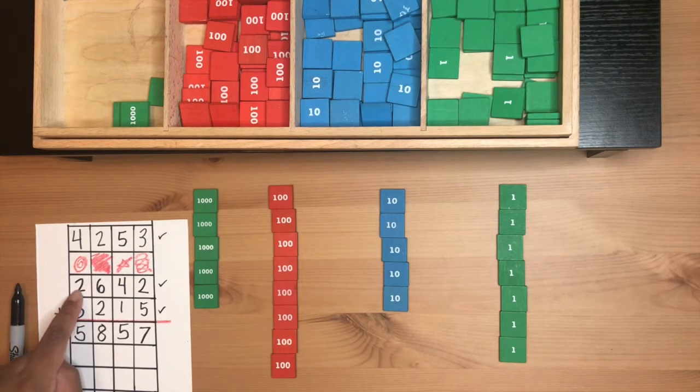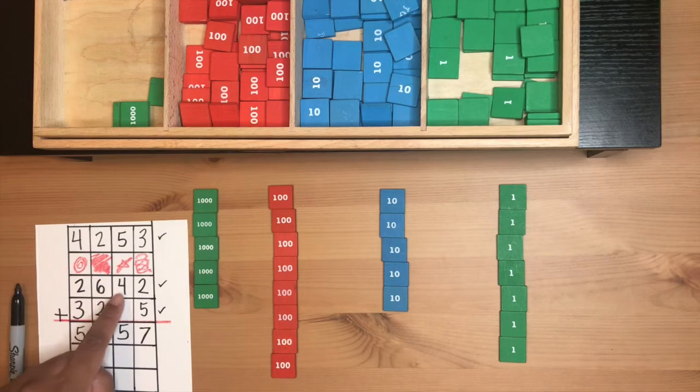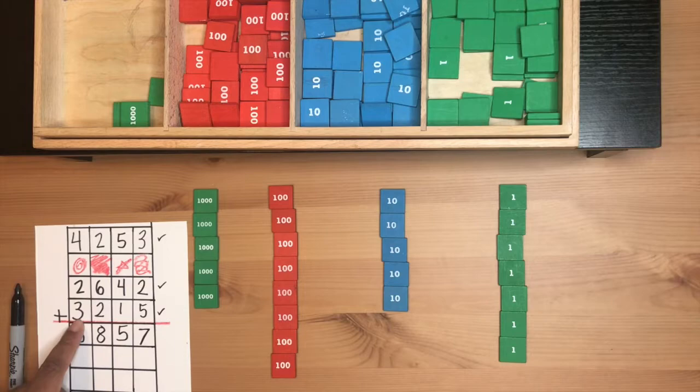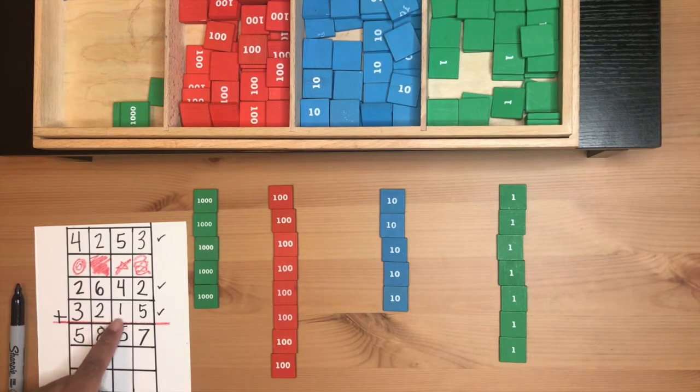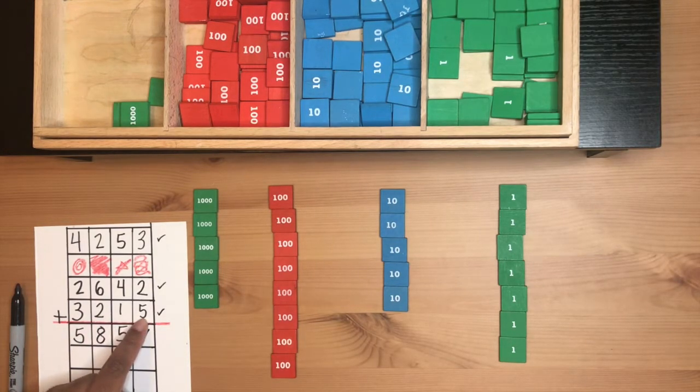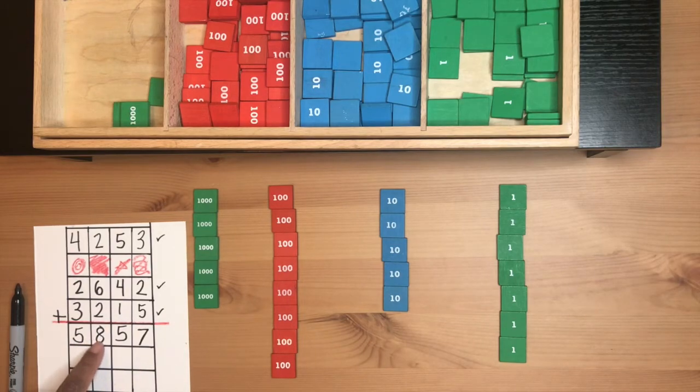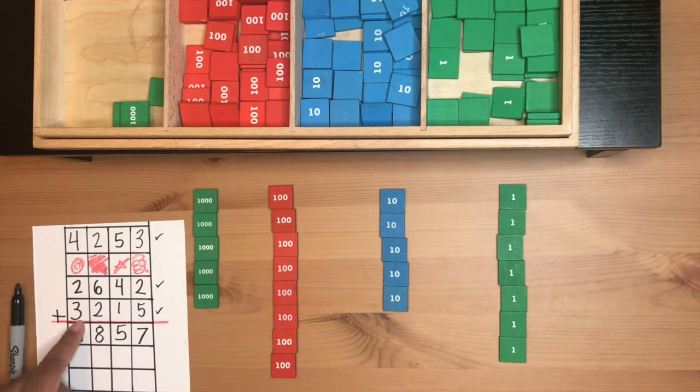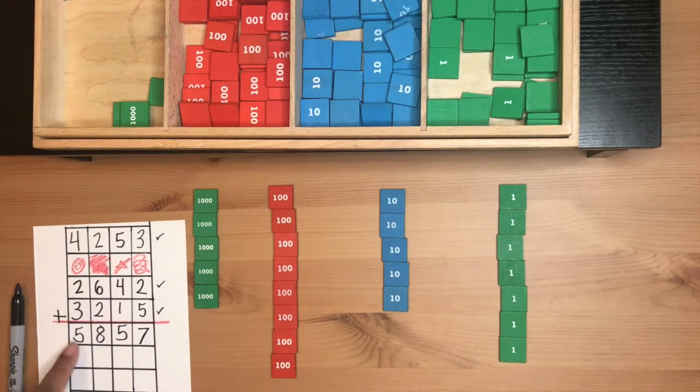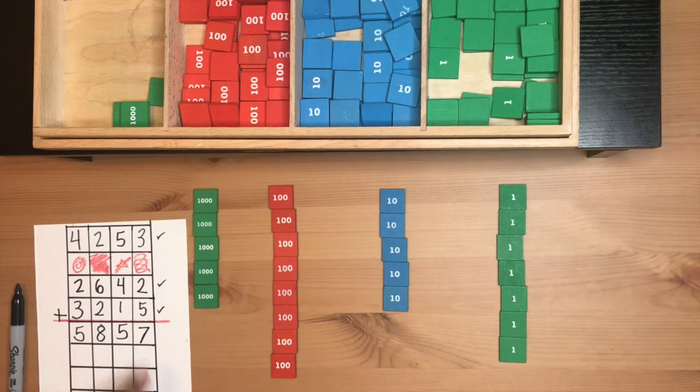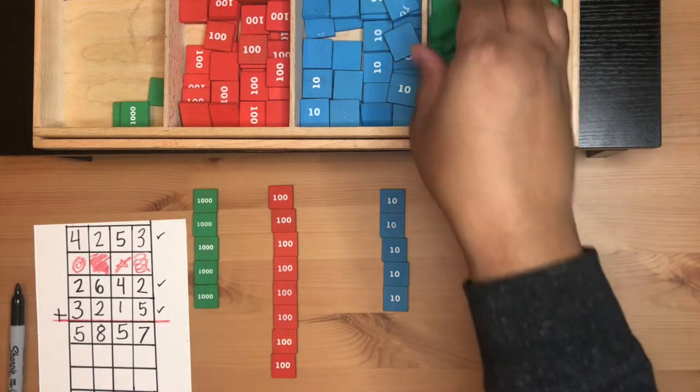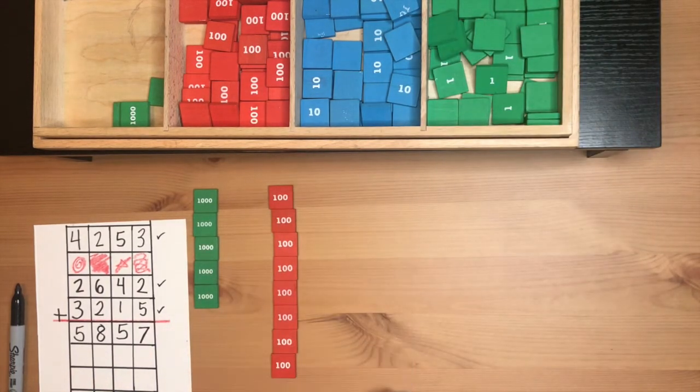Now we're going to read the problem: 2,600, 4-10, 2 units plus 3,200, 1-10, 5 units equals 5,800, 5-10, 7 units. 2,642 plus 3,215 equals 5,857. And we are done with that problem. We just did static addition.